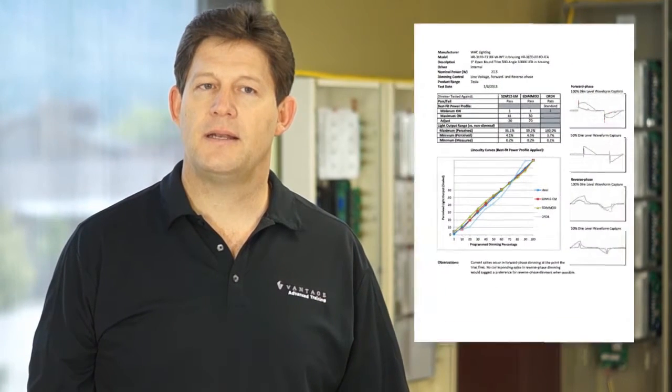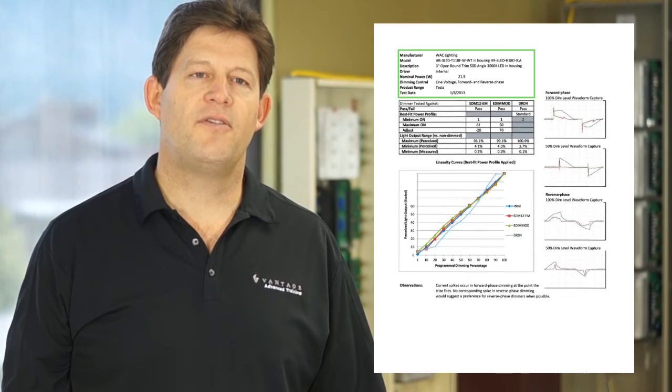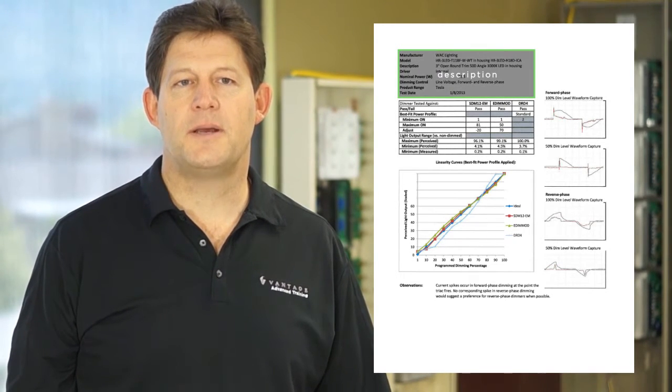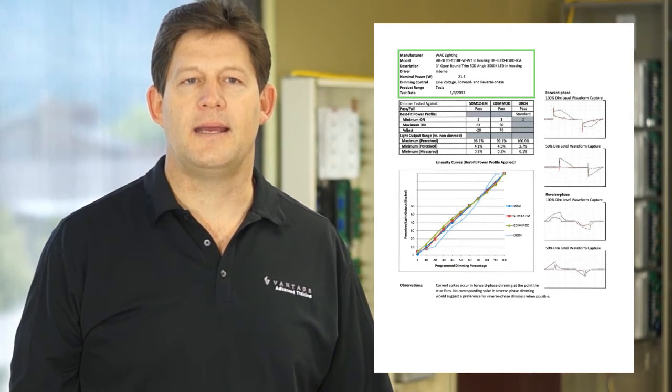So we'll take a look at a representative test report. At the top we see the header data which identifies the report, has a description, and some salient characteristics. It states dimming compatibility and the date it was tested.